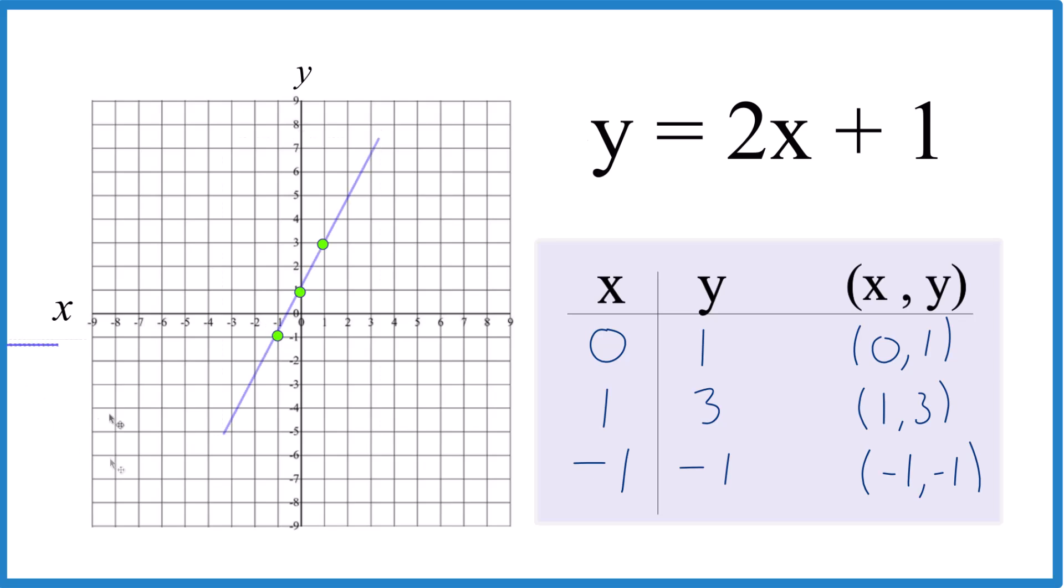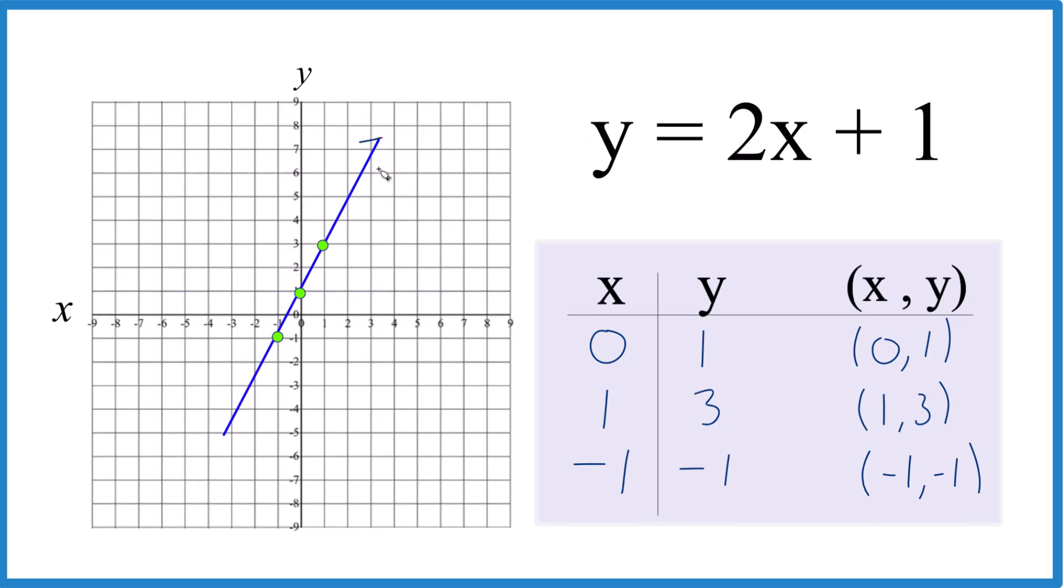That's our line. Let's put a line through that. Then we'll put arrows to show it goes to infinity. That's the graph for y equals 2x plus 1.